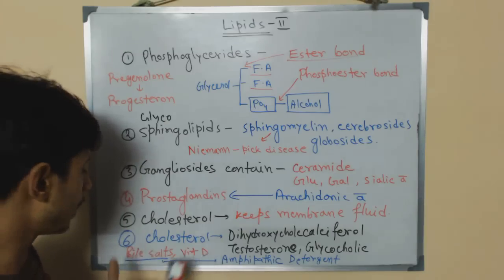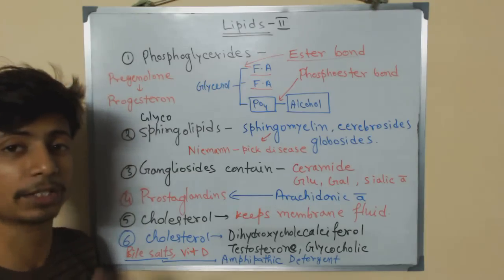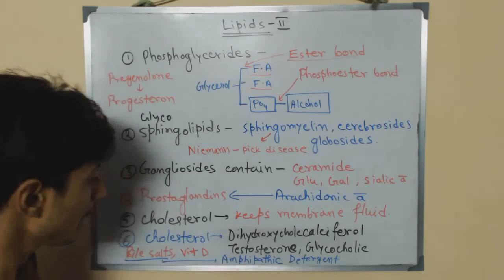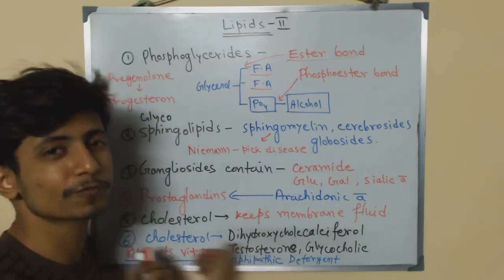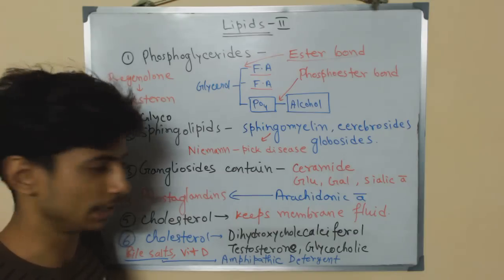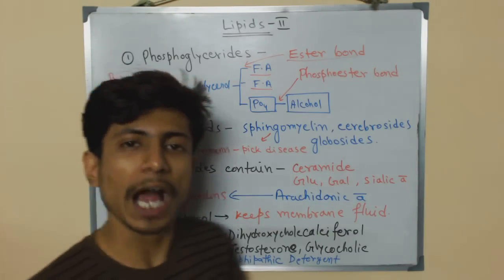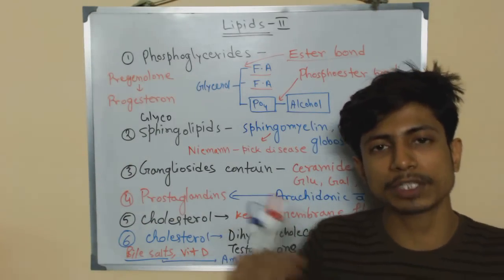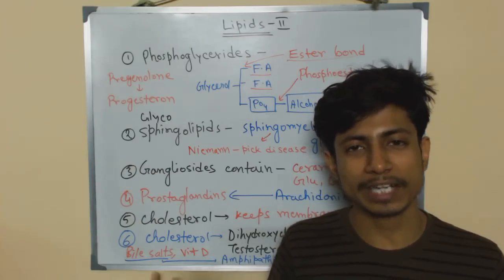Bile salts can also be produced from cholesterol, and Vitamin D is synthesized due to the presence of cholesterol in the skin upon exposure to UV sunlight. Bile salts are amphipathic, detergent-like molecules produced from cholesterol. Examples include bilirubin, biliverdin, and lecithin. Because they are amphipathic, they act as buffering molecules. That's it, thank you.